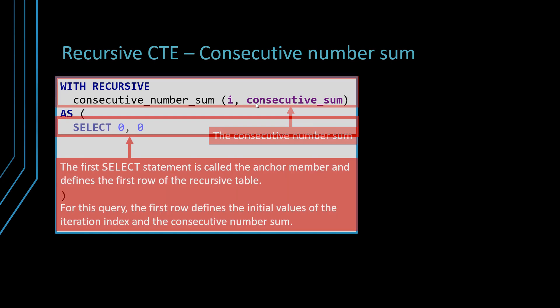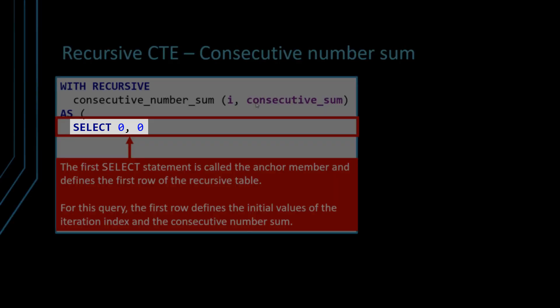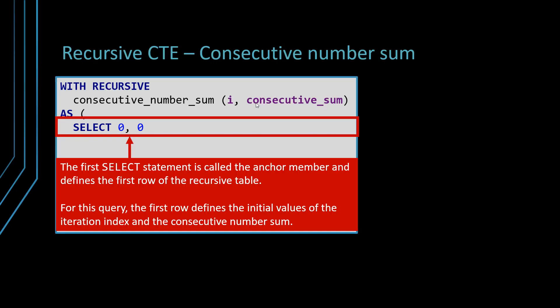And every recursive common table expression starts with the first query, which is called the anchor query. It's the one that defines the first record. In our case, we start from a record that will have the values of zero and zero. So i has the value of zero, consecutive sum has also the value of zero.